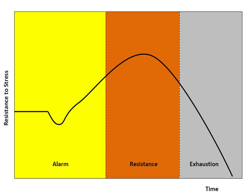GAS is characterized by three phases: a nonspecific mobilization phase, which promotes sympathetic nervous system activity; a resistance phase, during which the organism makes efforts to cope with the threat; and an exhaustion phase, which occurs if the organism fails to overcome the threat and depletes its physiological resources.